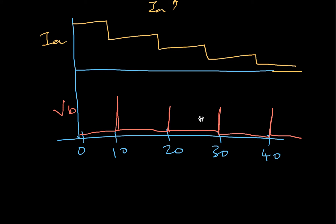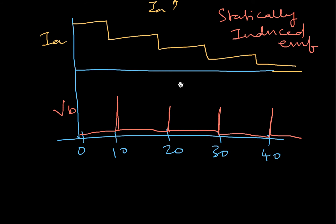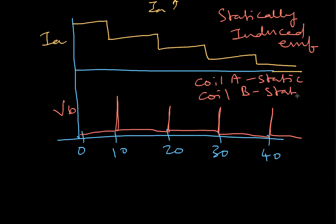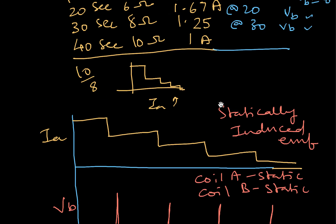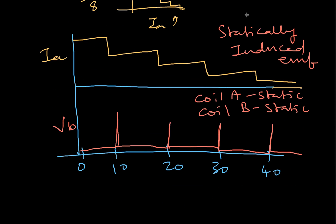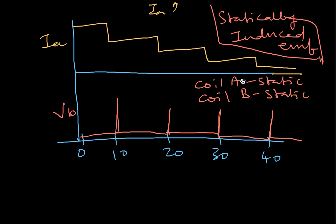Diagrammatically: IA starts at 5 amperes, drops to 2.5, then 1.67 — a step-reducing waveform. VB is normally zero but shows a spike wherever the current changes. This is an example of statically induced EMF because both coil A and coil B are static — only the flux is varying. This subtype is called mutually induced EMF, because it is induced between coils A and B.